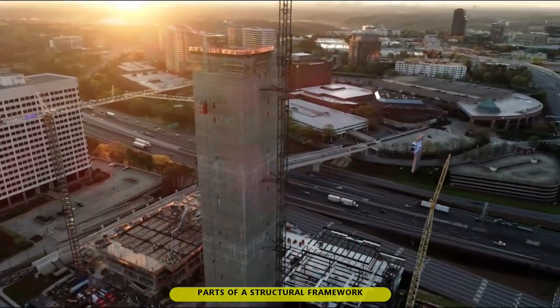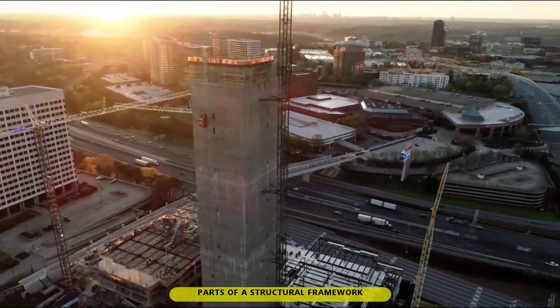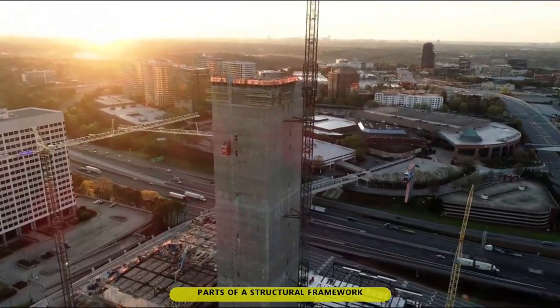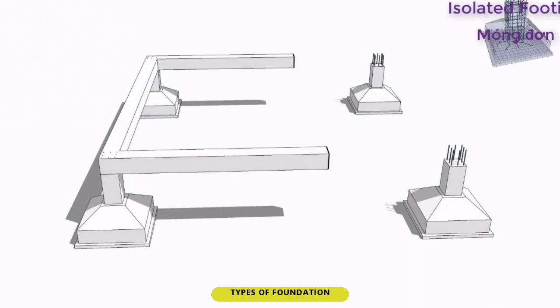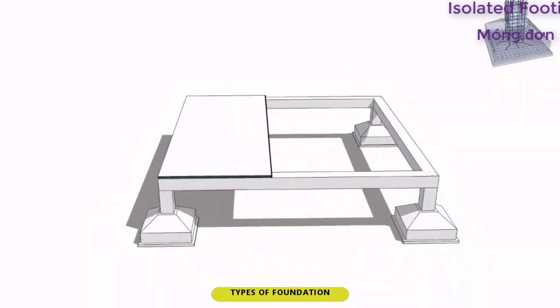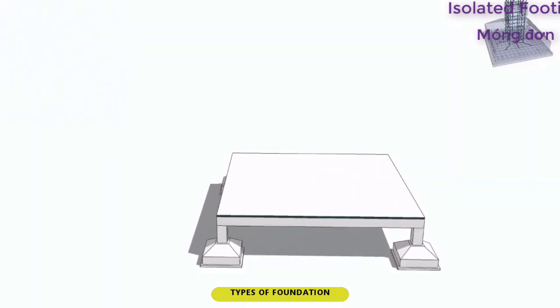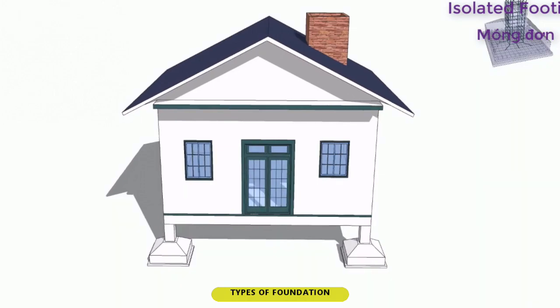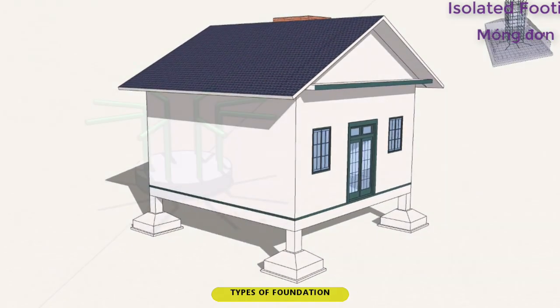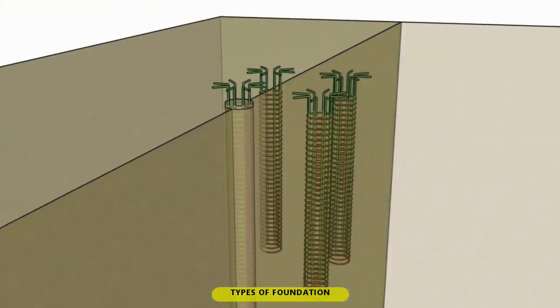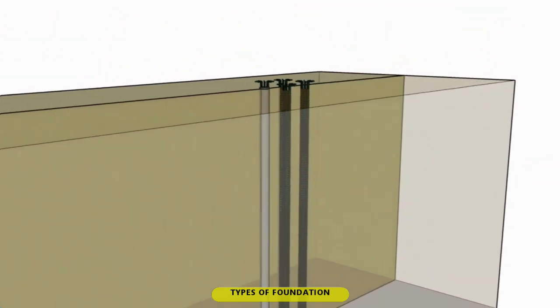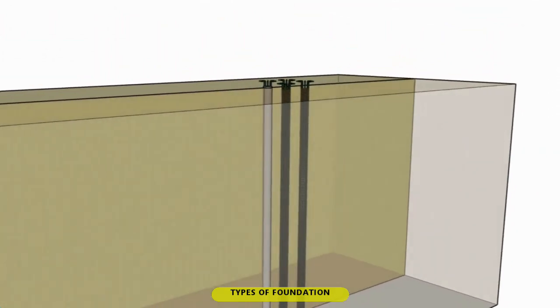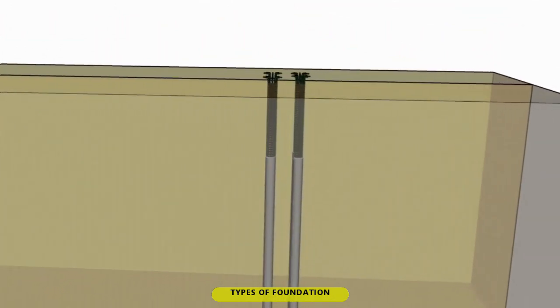Types of foundation: A. Shallow foundation — footings are closely placed under the substructure, near to the surface of the natural ground level. B. Deep foundation — footings are extended down on the earth at a greater depth.